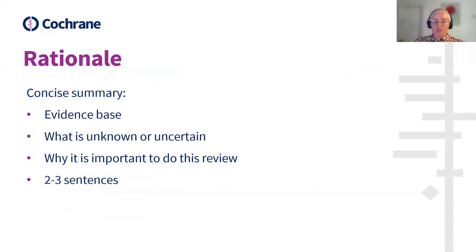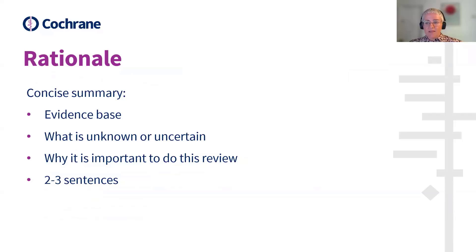On to the first heading, which is the rationale. Under this heading, you should provide a concise summary of the rationale for and the context of the review. This should include a brief description of the evidence base, what is currently unknown or uncertain, and why it is important to resolve this uncertainty within this systematic review. Ideally, it should be two to three sentences.